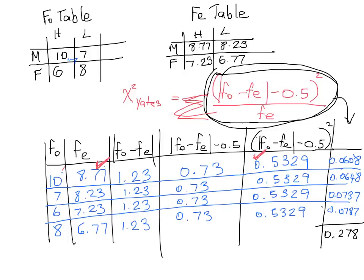So that's our Yates' continuity correction value. And let's just quickly go through again what we do with that value. We actually do the same thing we would have done with our regular chi-squared value.